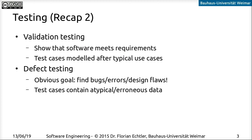On the other hand, defect testing has the goal of finding bugs and improving the software. The test cases for defect testing often contain data that the software will not usually encounter in regular usage — it's data that's intentionally flawed, maybe an empty list and stuff like that. Remember that these two are the main ideas behind software testing. Validation testing is related to the question 'are we building the right product?' and defect testing is related to 'are we building the product right?' — this is also sometimes called verification testing.